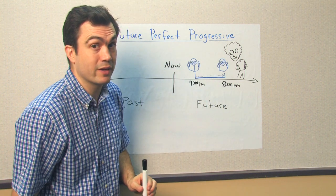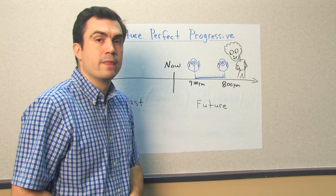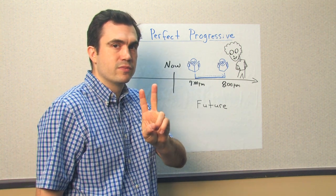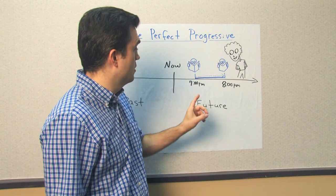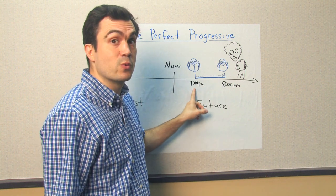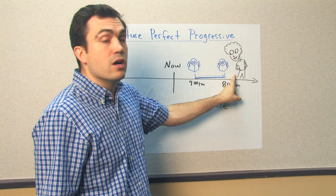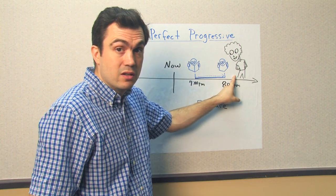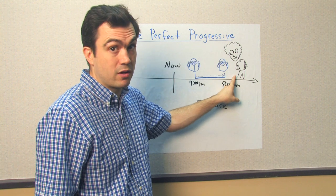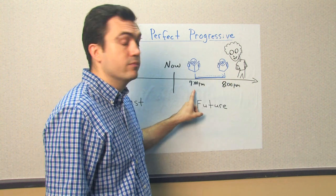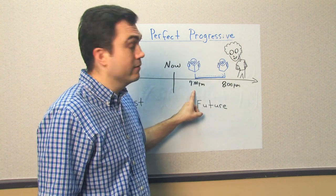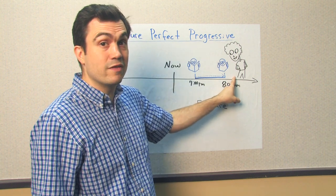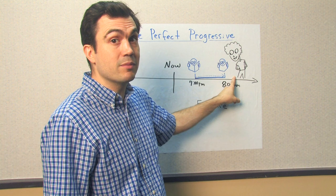Now, future perfect progressive. We have two events, two occurrences. Number one is Jeremy reading. Number two is Jeremy's mother coming home from work. So we start with Jeremy reading, and the second occurrence or the second event is Jeremy's mother coming home from work.